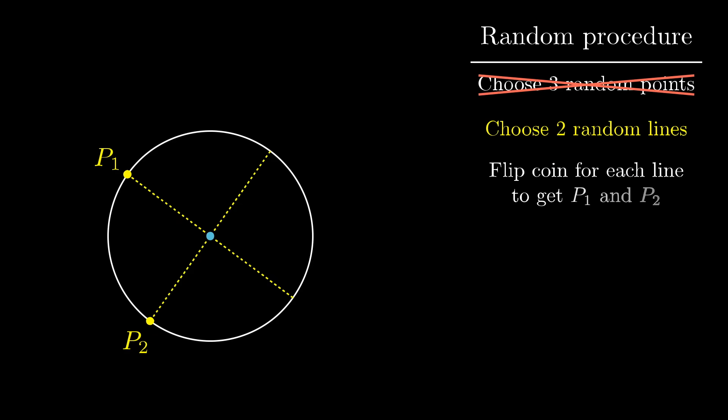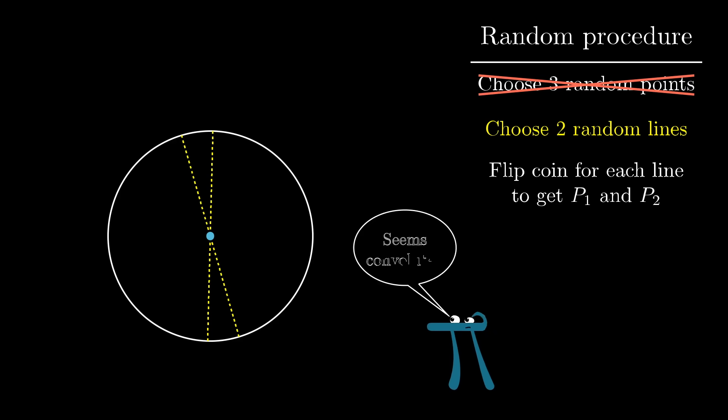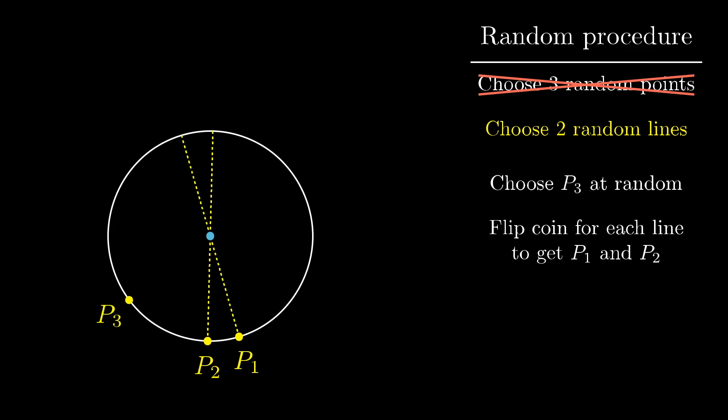Choosing a random line and flipping a coin like this is the same thing as choosing a random point on the circle, it just feels a little bit convoluted at first. But the reason for thinking about the random process this way is that things are actually about to become easier. We'll still think about that third point p3 as just being a random point on the circle, but imagine that it was chosen before you do the two coin flips.